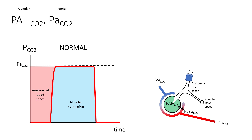Let's understand some of these terms more clearly. We have P capital A CO2 and P small a CO2. The capital A stands for alveolar CO2 and small a stands for arterial CO2. So P alveolar CO2 is the CO2 concentration in the alveoli, and P arterial CO2 is what you measure in your arterial ABG. For clarity, we'll call the P alveolar CO2 as P-ALV-CO2.